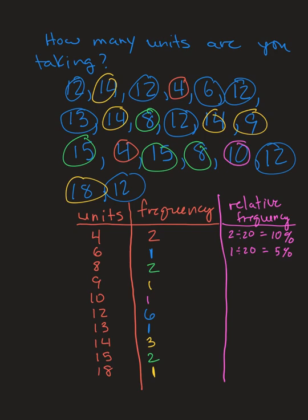2 divided by 20, we already did, that's 10%. And 1 divided by 20, again, about 5%. And now let's see, how about 6 divided by 20? So 6 divided by 20 is going to give us 0.3, or 30%. 1 divided by 20, again, 5%. 3 divided by 20, 15%, and then 2 divided by 20 is 10%, and 1 divided by 20 is 5%.